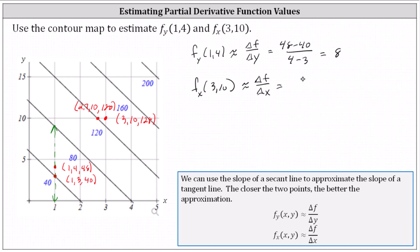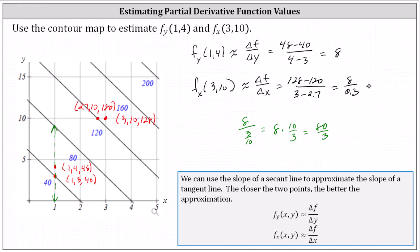The change in the function value is 128 − 120 = 8, and the change in x is 3 − 2.7 = 0.3. Simplifying, we get 8 / 0.3 = 8 / (3/10) = 8 × (10/3) = 80/3. This is our approximation for the partial of f with respect to x at (3, 10) — the slope of the secant line in the positive x direction, used as an estimate for the slope of the tangent line at the point (3, 10, 128).